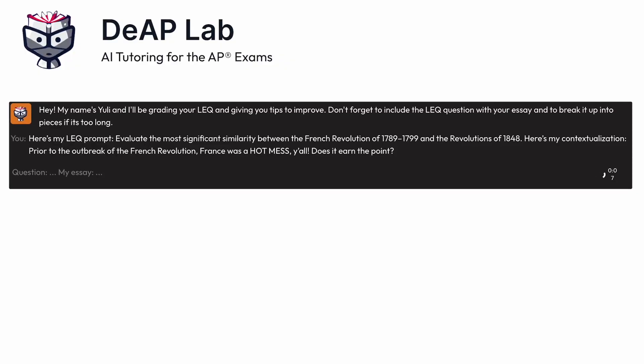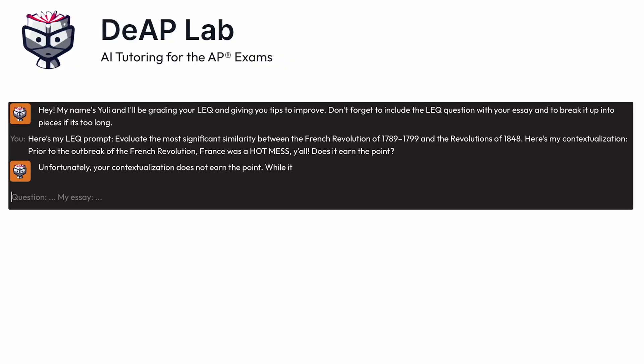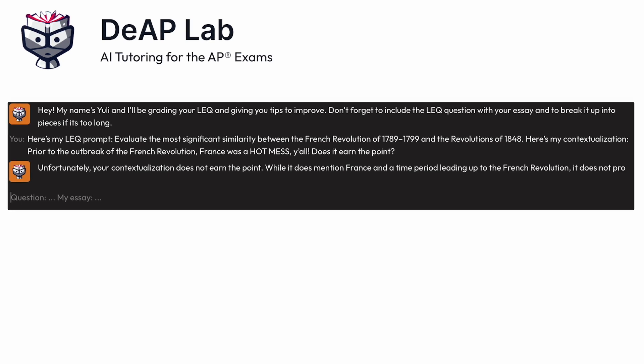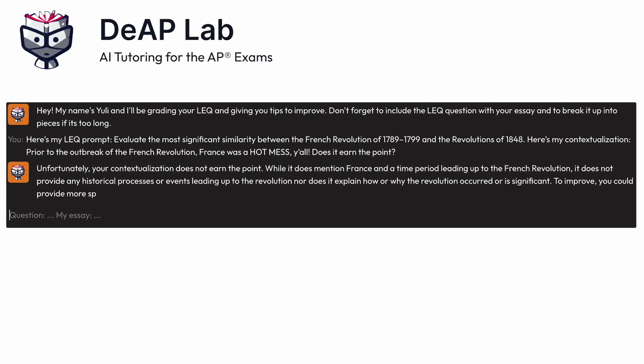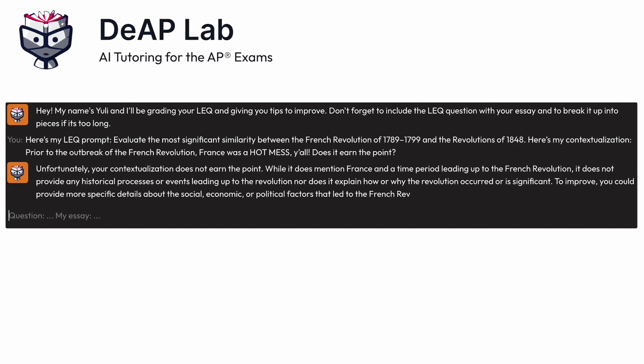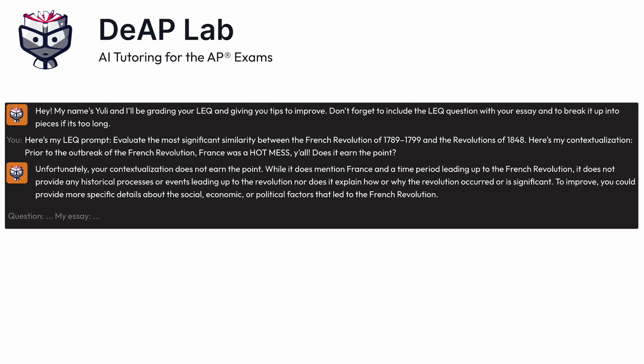I should say at this point: you can't just dump a whole essay into it. You'll need to add your essay one paragraph at a time. So give it your prompt, then give it your contextualization and thesis, and then ask it: does this earn the contextualization and thesis point? Then add your first body paragraph next.